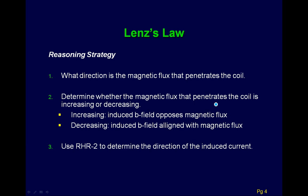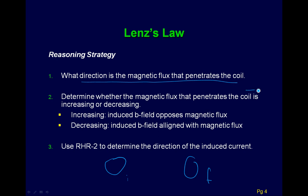This can be kind of tricky. Here's our strategy. First, we draw our pictures — I like to draw the initial case and the final case. We figure out what direction the magnetic flux penetrates the coil; sometimes you'll have to use right-hand rules for this. Then, by reasoning through the problem, you figure out whether the flux is increasing or decreasing between the initial and final states.